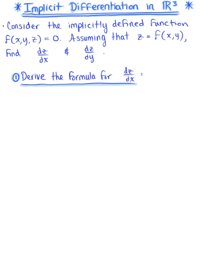We are going to consider the implicitly defined function F(x, y, z) = 0, and we want to assume that z equals f(x, y) — in other words, that z is a differentiable function of x and a differentiable function of y. Assuming this, we want to find both the derivative of z with respect to x and the derivative of z with respect to y.